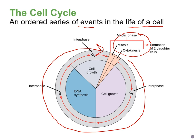Interphase has three subcomponents: the first gap or growth phase, the S phase when DNA is replicated and chromosomes are copied, and then the second gap, which is more growth and preparation for mitosis. Mitosis is when we divide the nucleus, and the division of the cytoplasm comes right after, which we call cytokinesis.